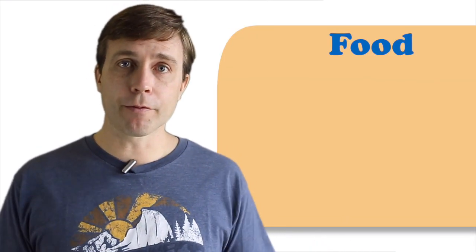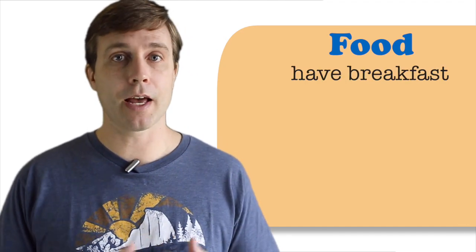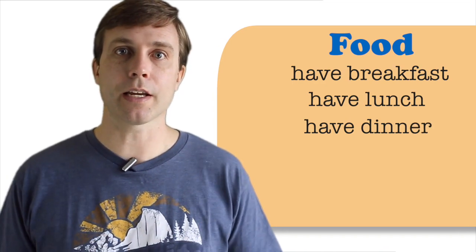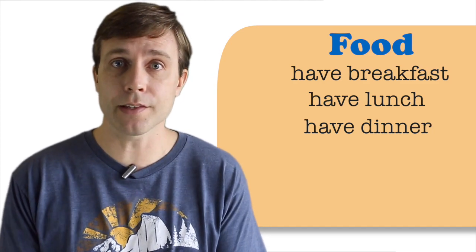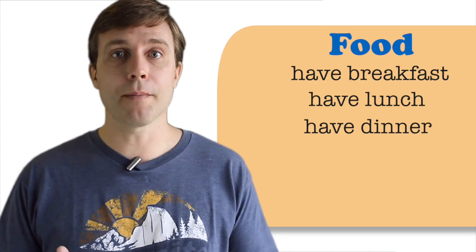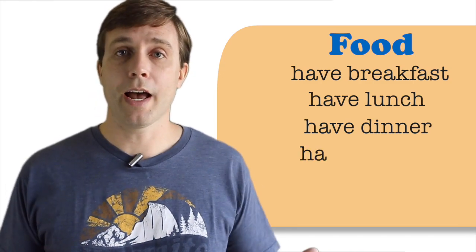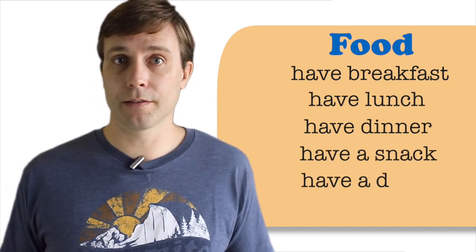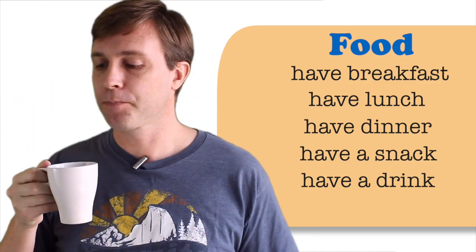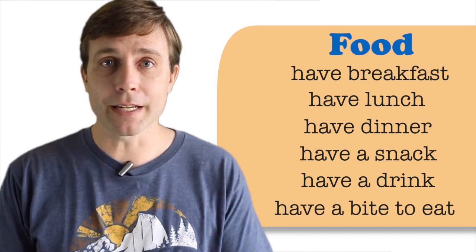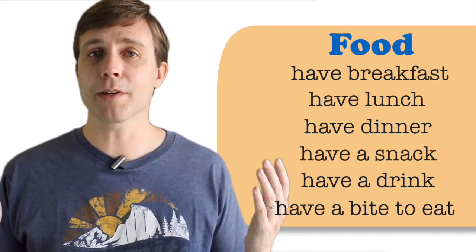Let's start by talking about food, because food is awesome. When talking about food, we can have breakfast, have lunch, and have dinner. In this case, have means what you're eating, so we can use it in the continuous tense: I'm having breakfast, or I'm having eggs for breakfast, which basically means that I'm eating eggs. You can also have a snack, have a drink like coffee. I like having coffee in the morning. You could also have a bite to eat — go out and have a bite somewhere.